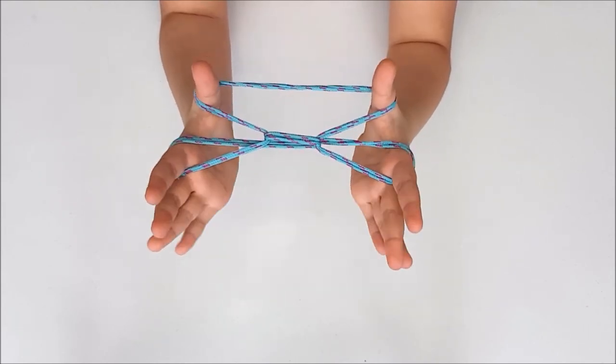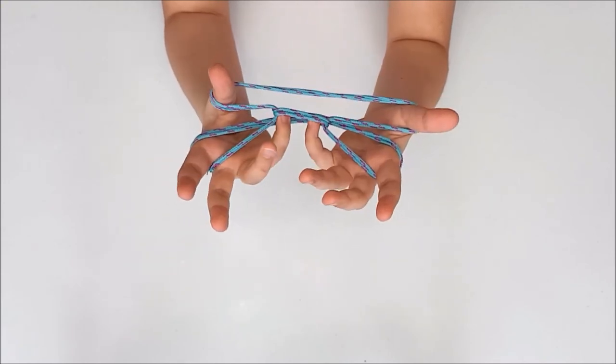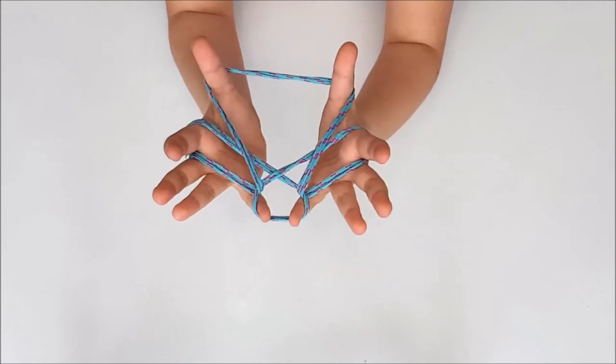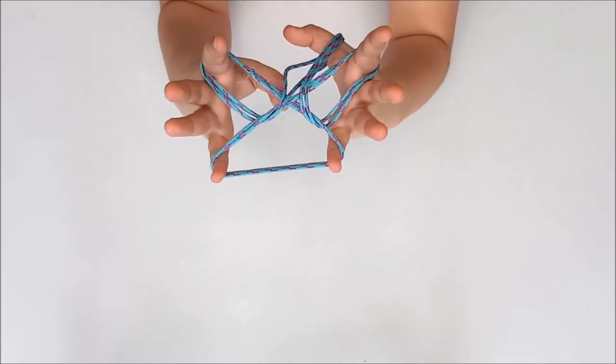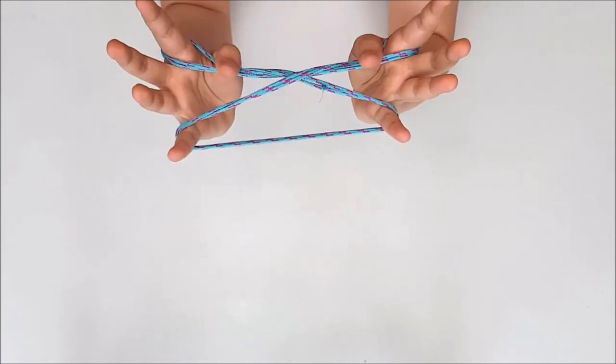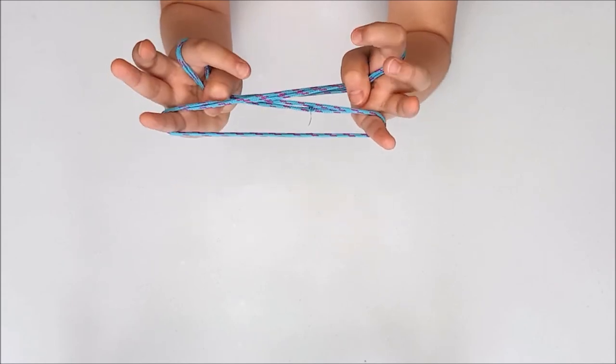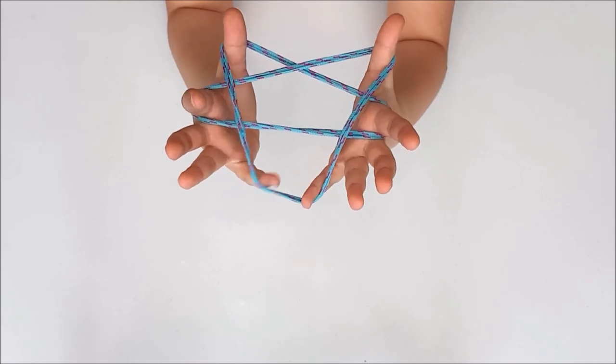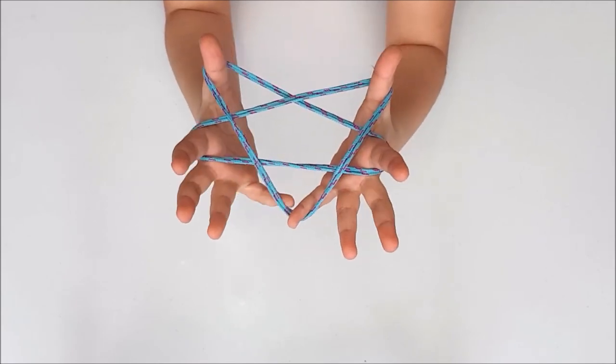Now to make the star, you must take your pinkies, hook this one string so it makes this shape, drop your thumbs, go over these two strings and hook these and just drop one pinkie to make the star.